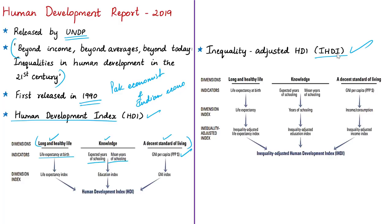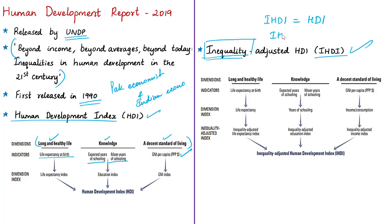The Inequality-Adjusted HDI (IHDI) combines a country's HDI with how those achievements are distributed among the population, calculated according to the level of inequality in each dimension. A country with a high HDI does not mean all people enjoy the same human development. The IHDI measures the overall loss to human development due to inequality: when there is perfect equality, IHDI equals HDI, but IHDI falls below HDI as inequality rises.